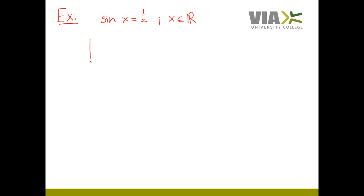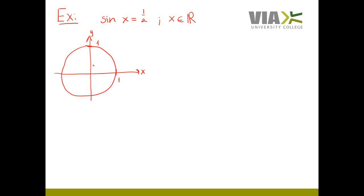If we then look at the unit circle, you hopefully recall that the sin value is found on the y-axis. So if we are looking for angles — that is, values for x — where the sin value equals 1 over 2, that must be approximately here. This specific angle here will give me a sin value equal to 1 over 2.